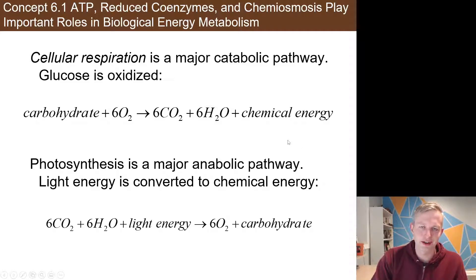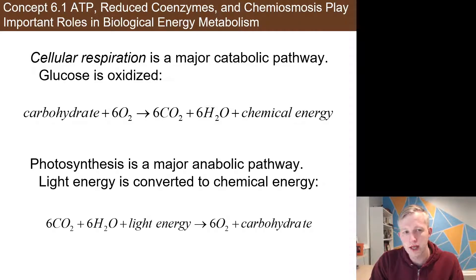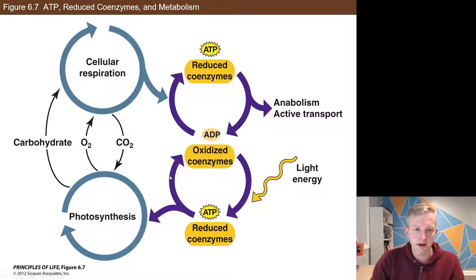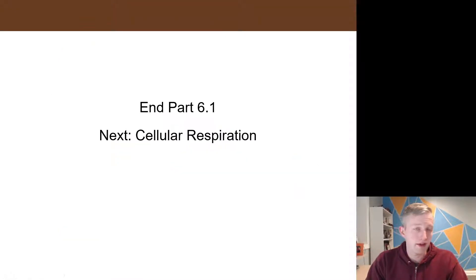This section ends with a reminder about respiration and photosynthesis, the two big topics of the chapter. Respiration is a catabolic pathway, involving the oxidation — the loss of electrons from glucose — which releases energy and is overall exergonic. Photosynthesis is the anabolic pathway: taking constituent parts, adding in energy, and storing it as carbohydrate, making it a net endergonic reaction. A diagram shows the relationship between the two. That is the end of 6.1 — next up is cellular respiration.